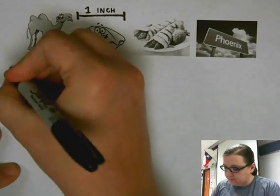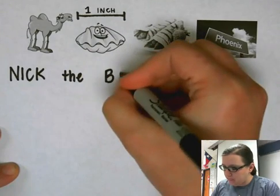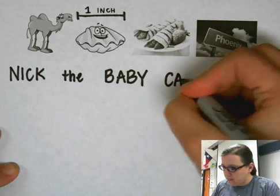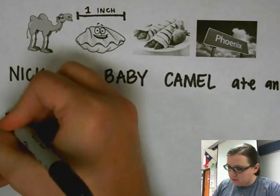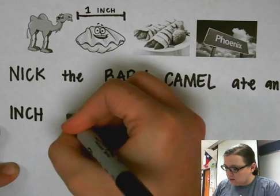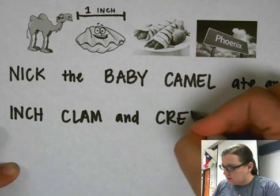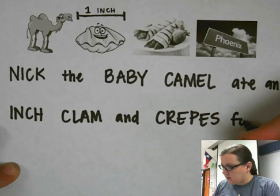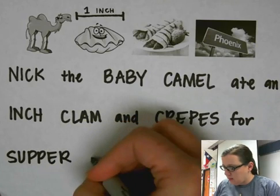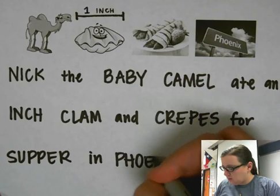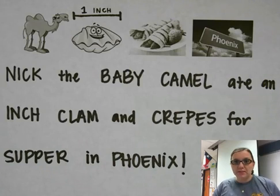Here's the saying: 'Nick the baby camel ate an inch clam and crepes for supper in Phoenix.' So again: Nick the baby camel ate an inch clam and crepes for supper in Phoenix.